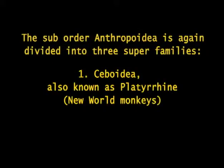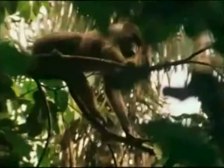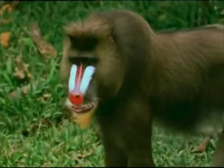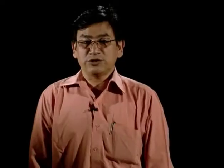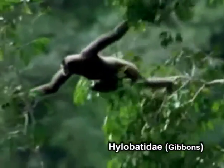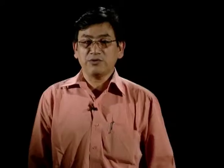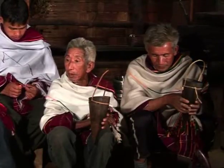Sub-order Anthropoidea: all apes, monkeys, and human beings belong to this sub-order. It is again divided into three super-families. Number one, Ceboidea, also known as Platyrrhini or new world monkeys. Number two, Cercopithecoidea, also known as Catarrhini — old world monkeys. And number three, Hominoidea. The super-family Hominoidea consists of three families: Hylobatidae represented by gibbons; Pongidae, which consists of three genera — Pongo (orangutan), Pan (chimpanzee), and Gorilla; and Hominidae, represented by the genus Homo, which includes the present human, Homo sapiens.